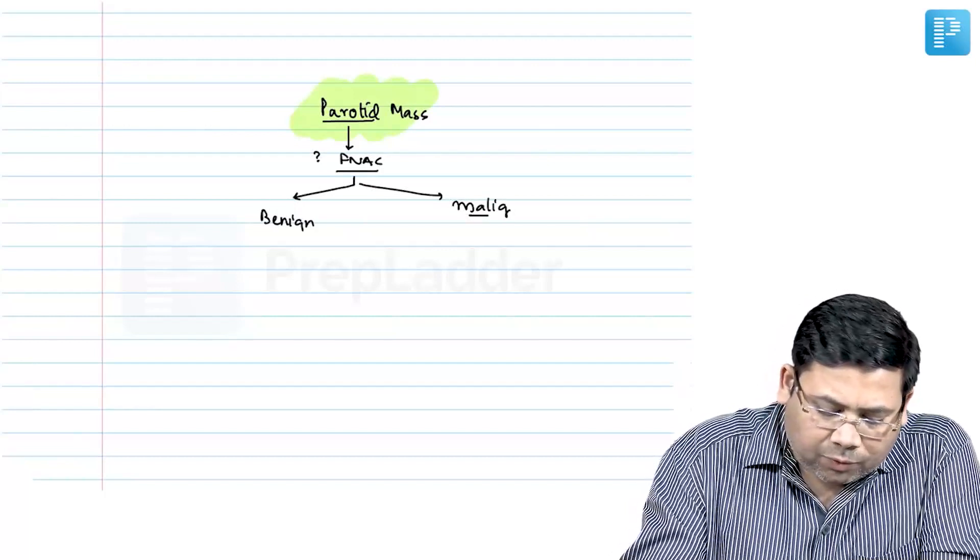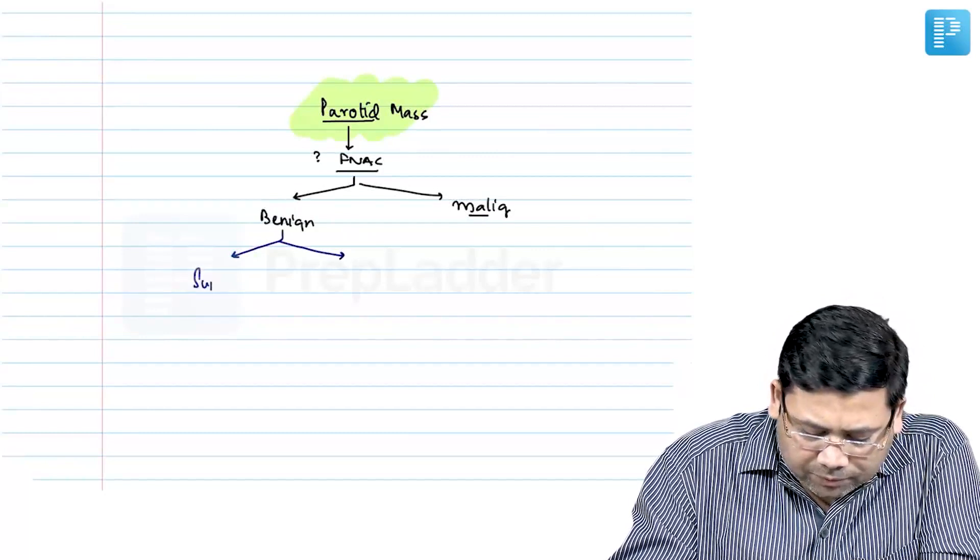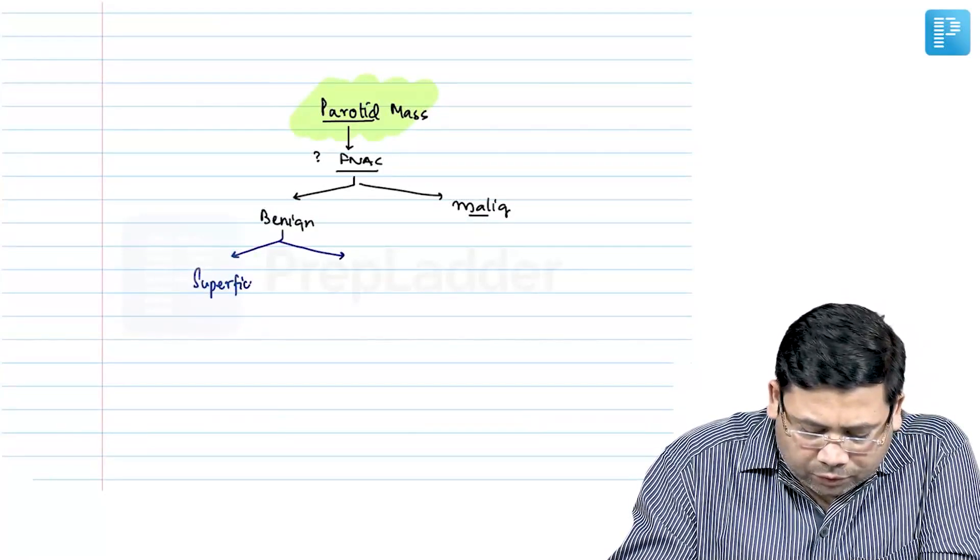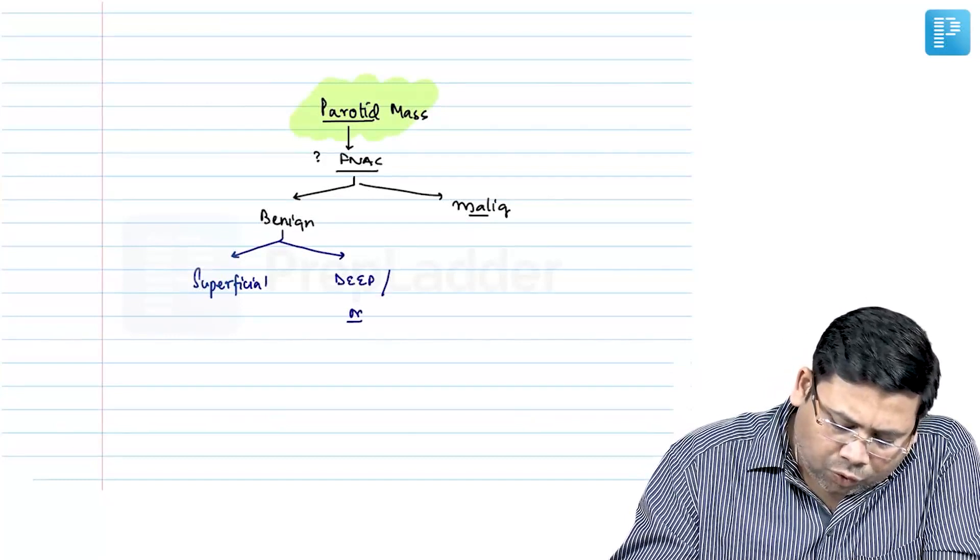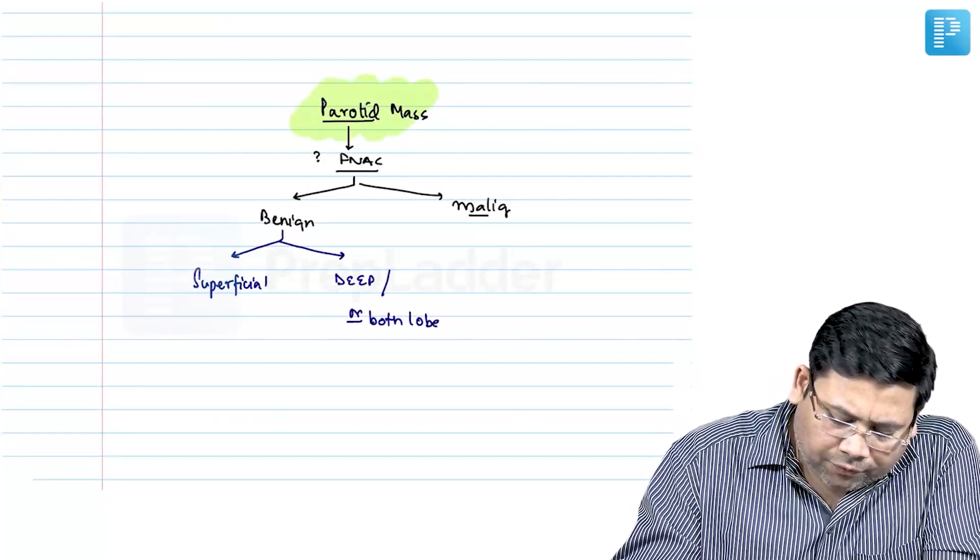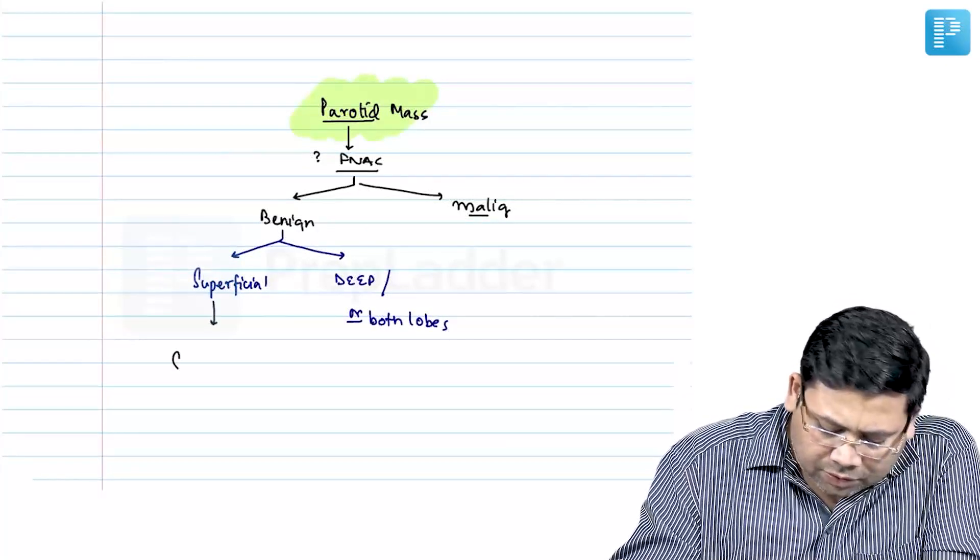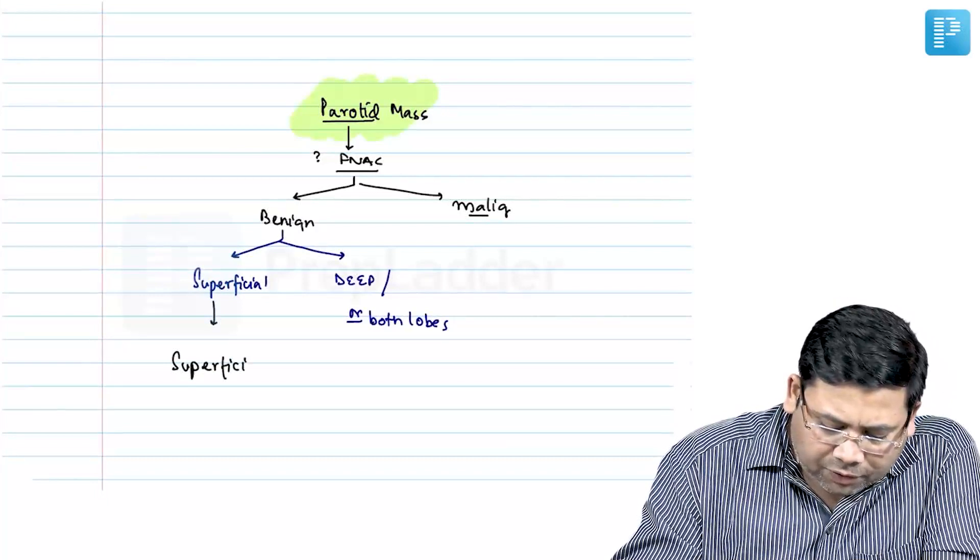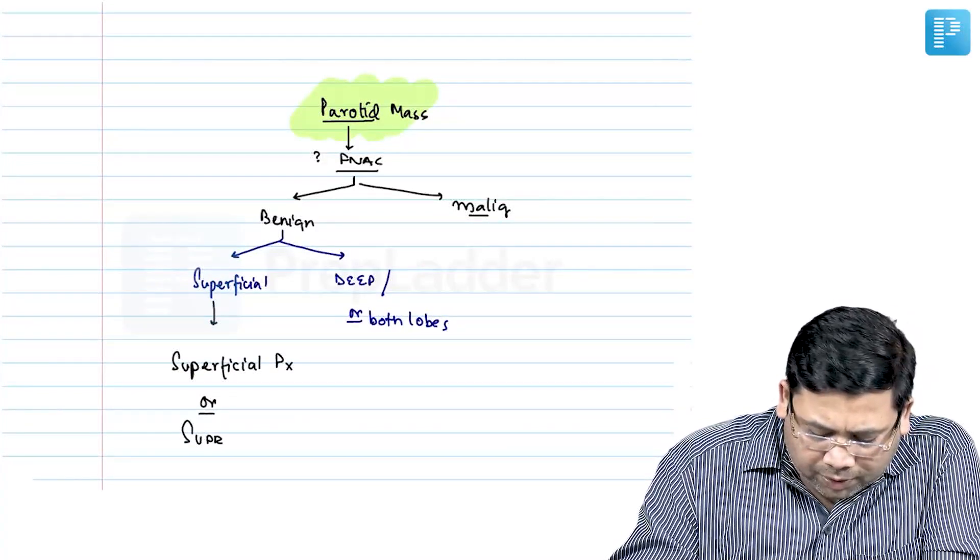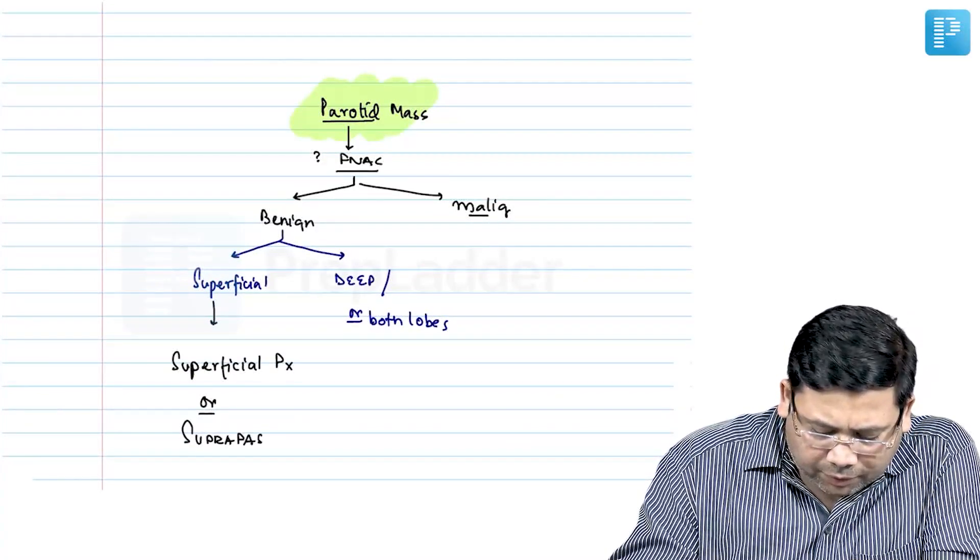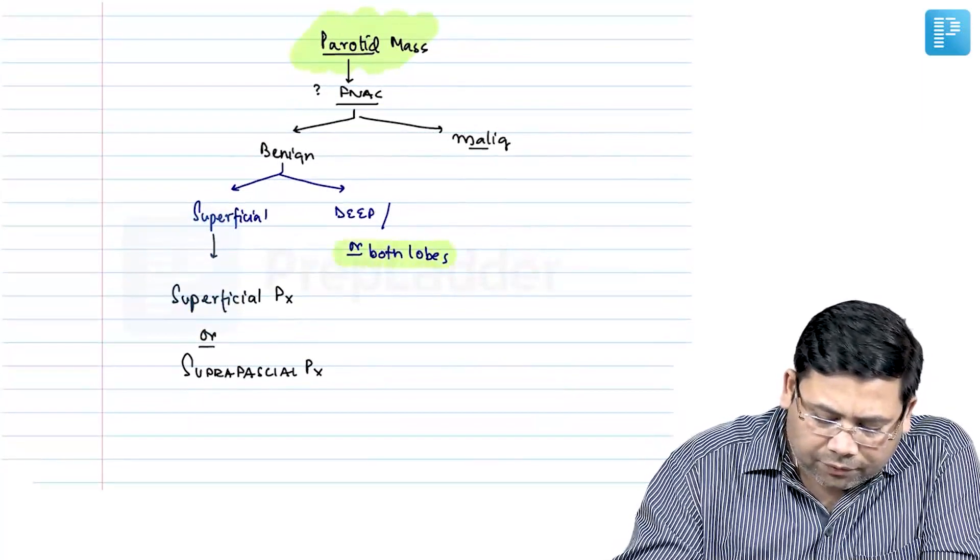If it is found to be benign, see whether it is superficial or whether it is deep. If it is superficial lobe tumor, you can go for superficial parotidectomy where you remove the complete superficial lobe, or you can go for suprafacial parotidectomy.